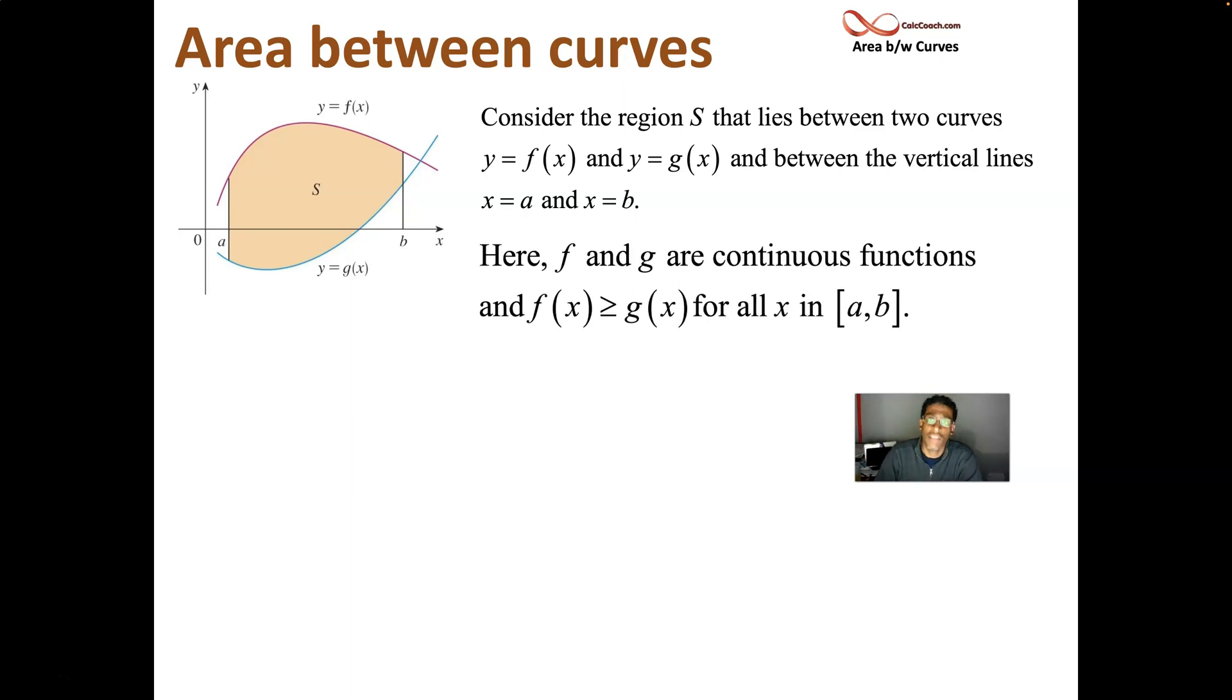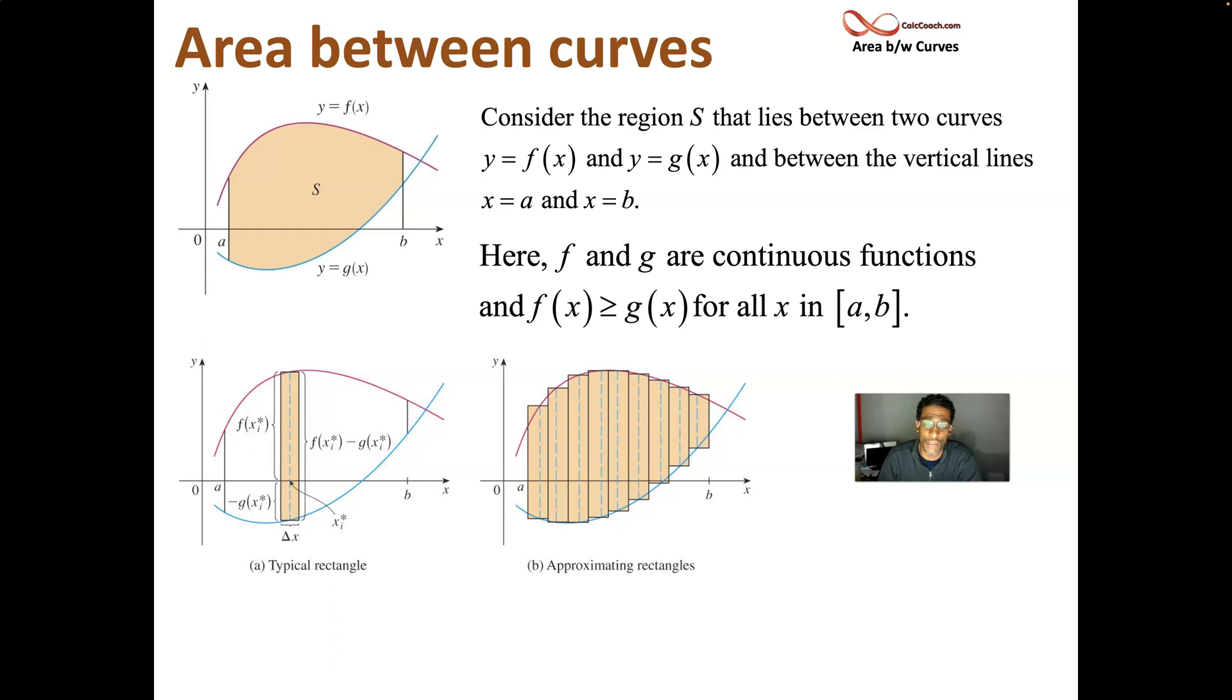Now, f of x is going to be greater than g of x here. And just like when we were calculating area under the graph of a function and above the x-axis, we're going to do the same thing we did there where we use rectangles, where we have two dimensions. We have the width of the rectangle and we have the height of the rectangle. The width is still delta x. We're going to approximate it with a finite number of rectangles. This picture has about eight of them there.